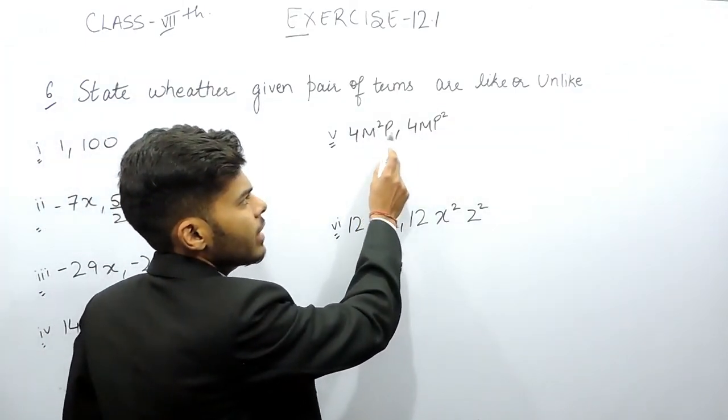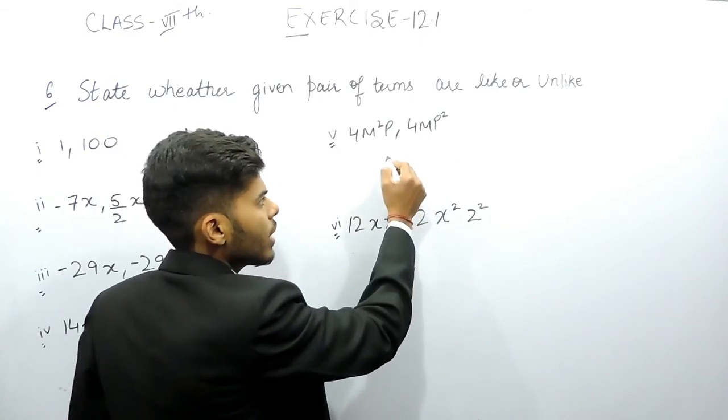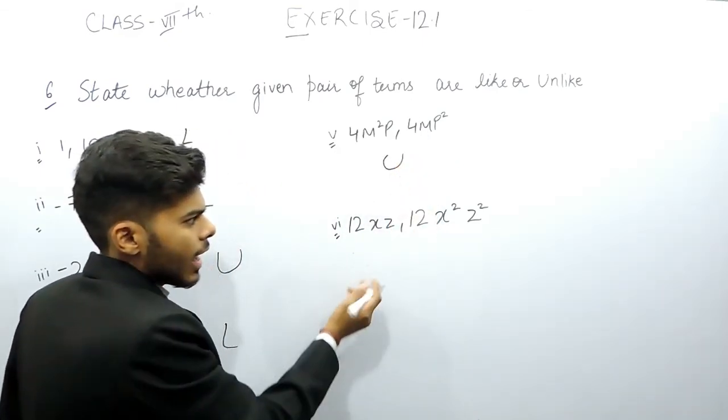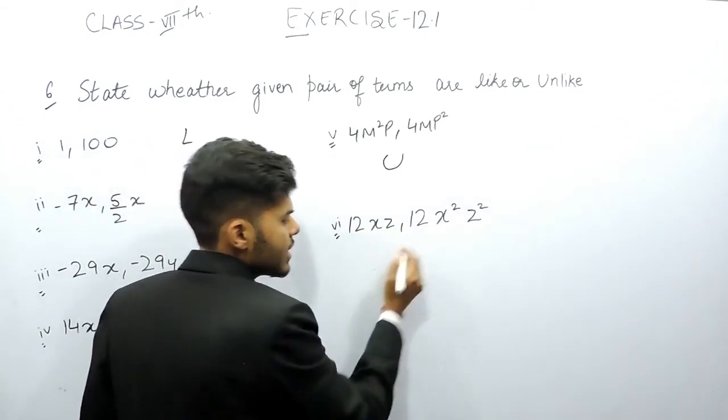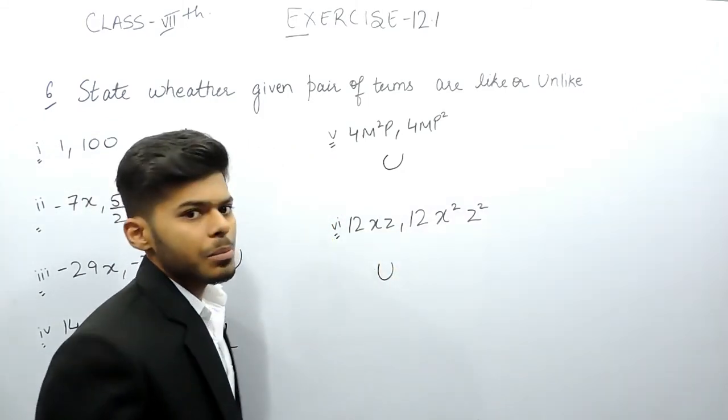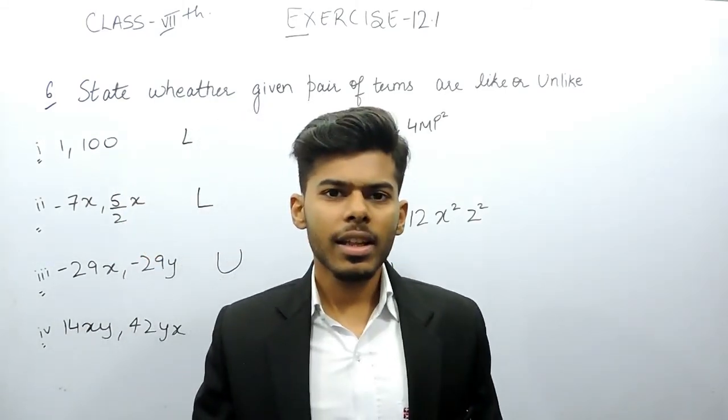It is m²p and mp², so they both are different, that's why unlike terms. And in the last part, the variable quantity is xz and this is x²z², so they are again unlike terms. This is how you can solve this question. Thank you.